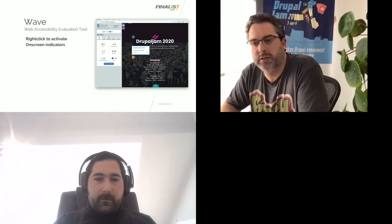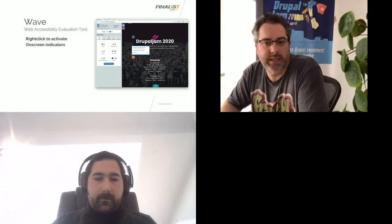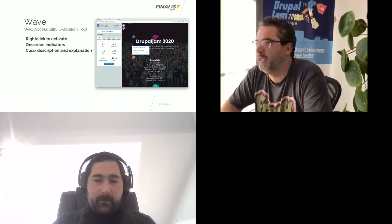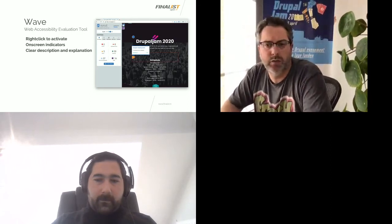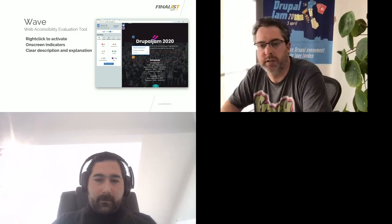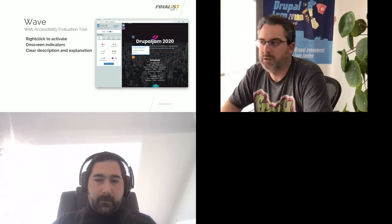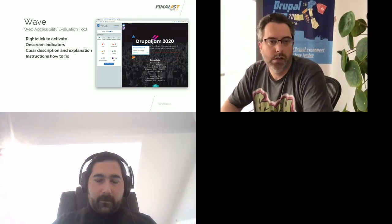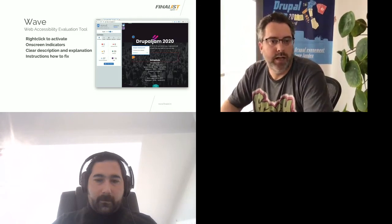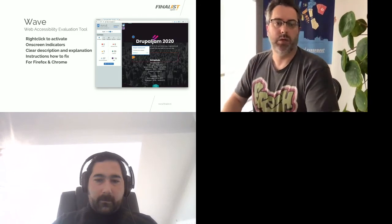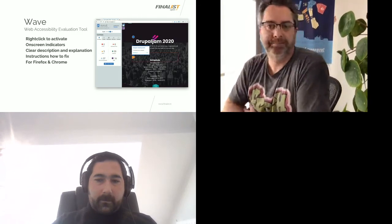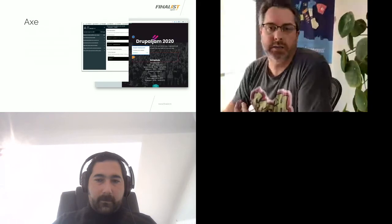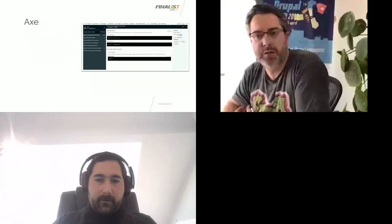First up is WAVE — the Web Accessibility Evaluation Tool — a tool from WebAIM, which is a non-profit organization from the University of Utah that provides tools and training to make the web more accessible. WAVE is a pretty cool extension: you can right-click anywhere on your page to activate it, and it shows an on-screen indicator so it's immediately clear where the issue is. It gives a clear description, a short explanation, and a link to a more extensive explanation of the issue, plus instructions on how to fix it. It's available for Firefox and Chrome.